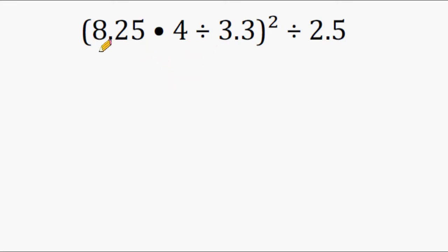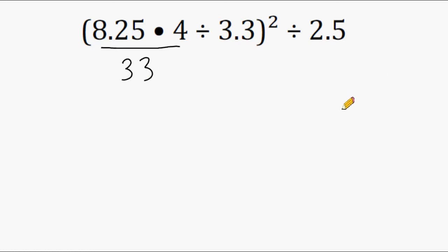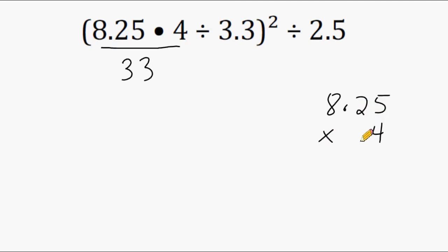First we're going to figure out what 8.25 times 4 is. I already know that 8.25 times 4 is going to result in 33, but just to make sure I'm going to go off to the side and multiply those values together. We're going to start with 8.25 and multiply that by 4. Remember, when multiplying a number with a decimal by a number without a decimal, you do not have to line up any decimal points — that is just when you add and subtract decimals.